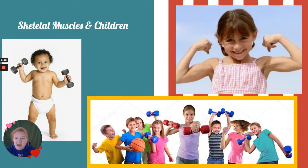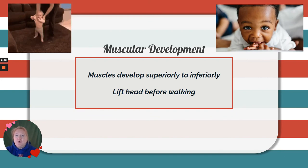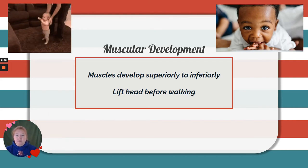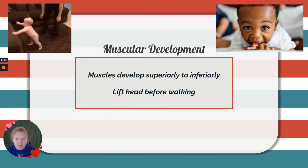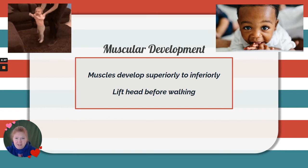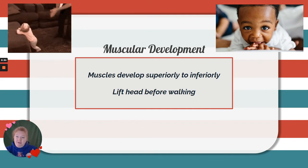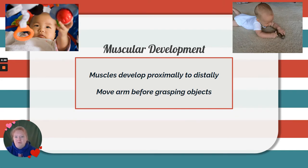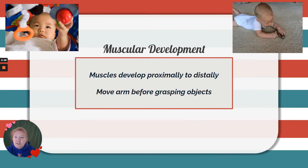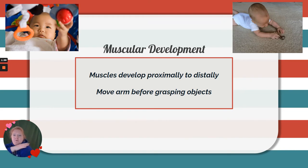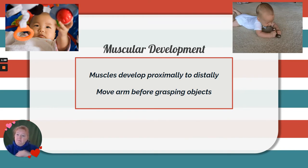So skeletal muscles and children — we're not talking about cardiac muscles and we're not talking about smooth muscles; we are focusing on skeletal muscles. So muscular development: one important thing to note is that muscles develop from superior direction to inferior direction. Babies will lift their head before they can walk. Muscles also develop proximally to distally — so babies can move their arms, flail them, even before they can grasp things. So: superior to inferior, proximal to distal.